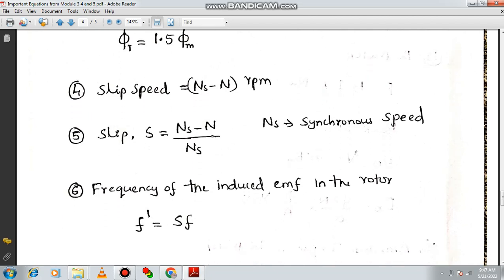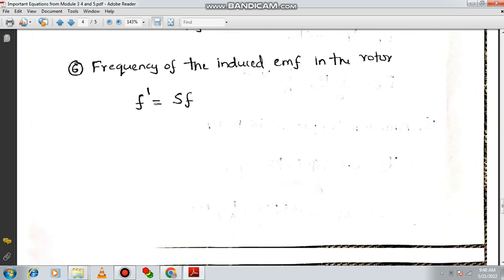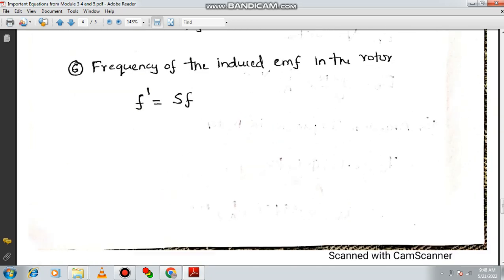Then next one is very important formula. That is how to calculate the frequency of the induced EMF at the rotor part. Do use the formula f dash is equal to s into f. What is s? S is the slip. You know how to calculate the slip, ns minus n divided by ns. f is the supply frequency. These are the things you need to note on this. Very essential. Hope you are noting down.